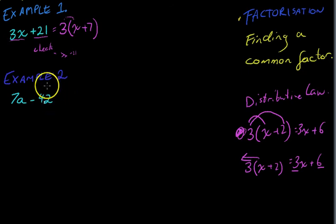Next one. 7a minus 42. Now, again, we're looking for a common factor here. The common factor between 7a and negative 42 would be 7. 7 goes into both of those. Now, ask yourself the question, 7 times what makes 7a? It's a. And 7 times what makes negative 42? It's negative 6.